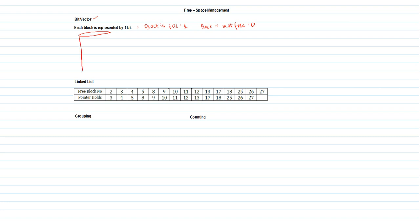Consider our hard drive with different blocks numbered 1 through 12 and up to 60. Suppose there is a file called G, and this file is allocated in blocks 2, 4, 15, and 16.